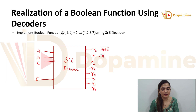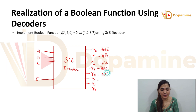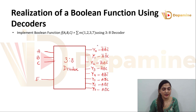y1 is represented by minterm a̅b̅c. y2 is represented by minterm a̅bc̅. y3 is represented by minterm a̅bc. y4 by abc̅ — wait, y4 by ab̅c̅, y5 with ab̅c, y6 with abc̅, and y7 with abc. So the minterms are m0, m1, m2, m3, m4, m5, m6, m7.